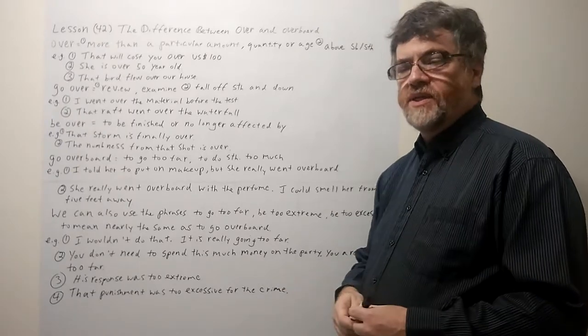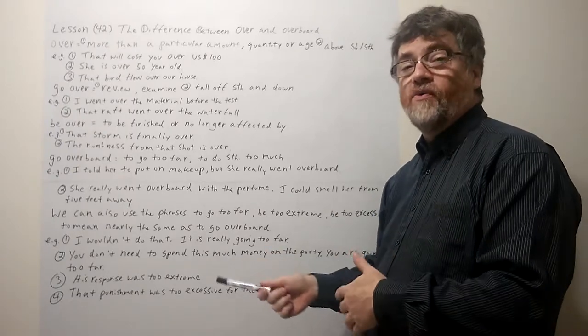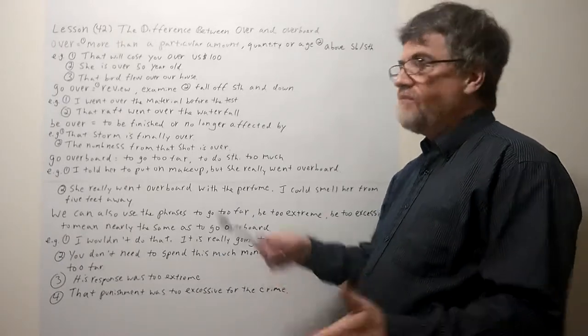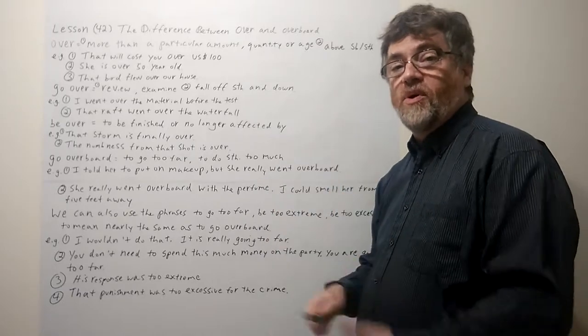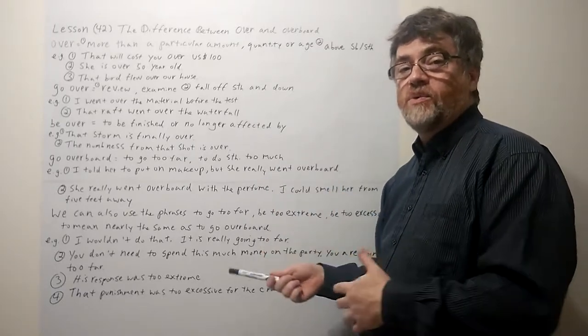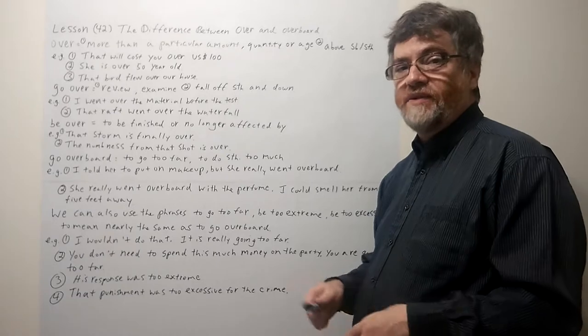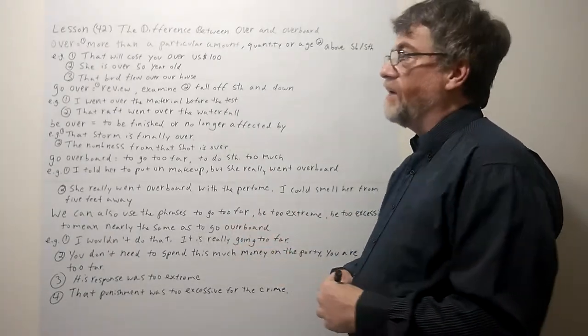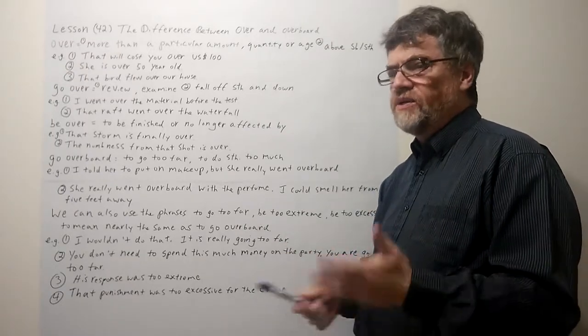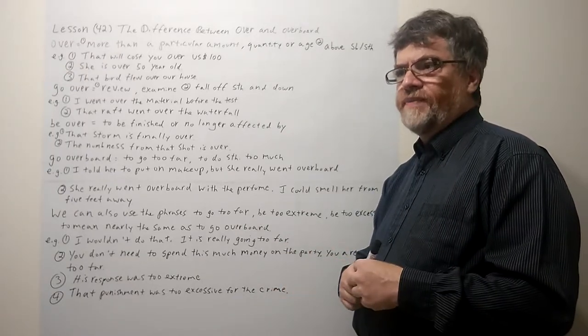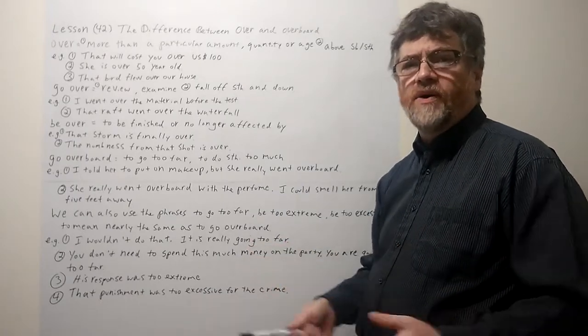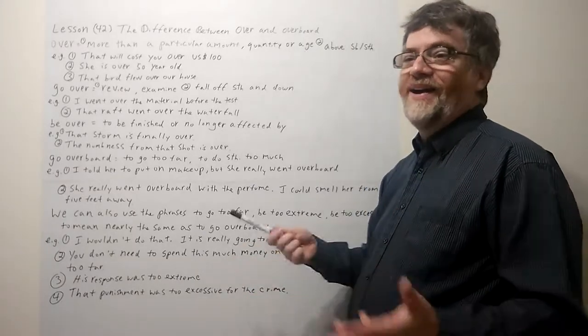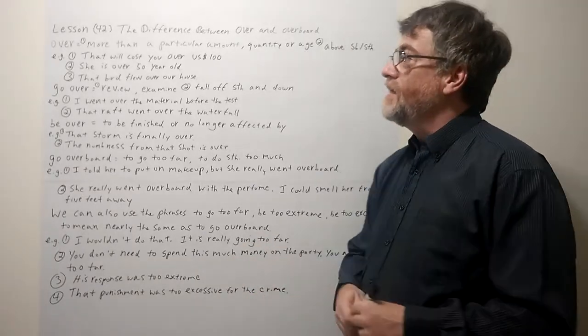A lot of times students might say something is over or goes over and they stop there when they really should be saying overboard. Something is overboard or something is too far. Over by itself doesn't really mean too far. Over just means more than something else. That's actually a big mistake. If a Westerner hears a student of ESL say something is too over, they're like, over what? What is it over?